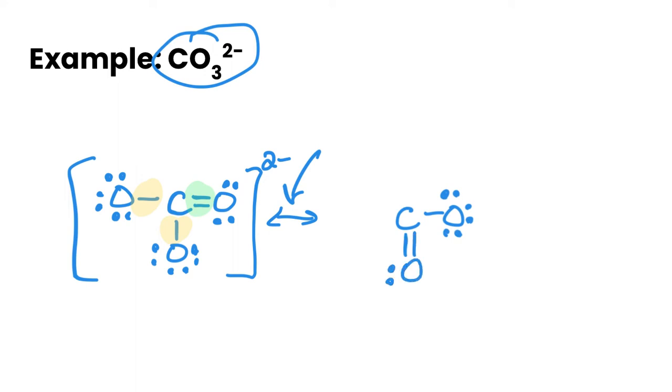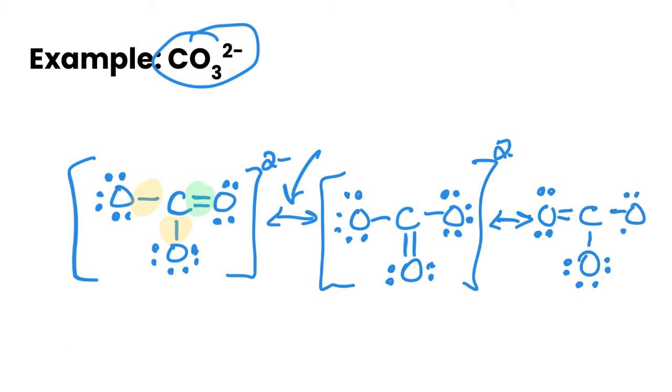So we've got just our four down here and our oxygen. Again, square brackets, two negative charge, and then we would have one more resonance structure. Let's see if we can squeeze it in on the side here where our double bond is on the left side now. Our oxygen down here and our other oxygen here. Again, square brackets and two negative charge.